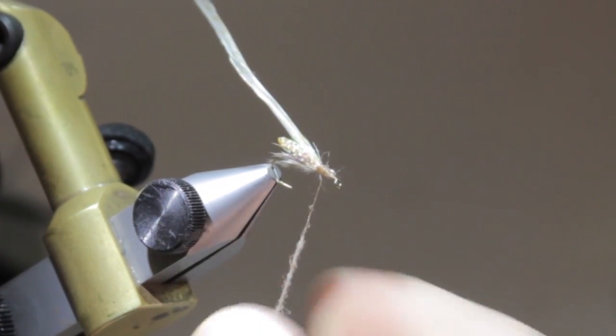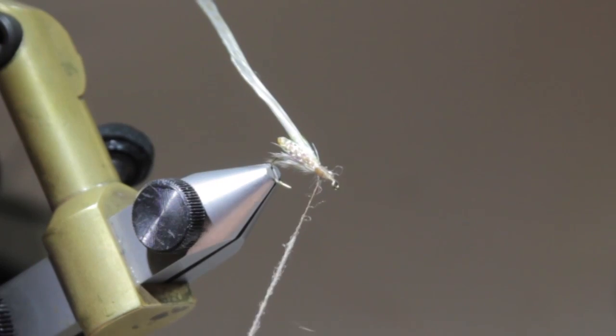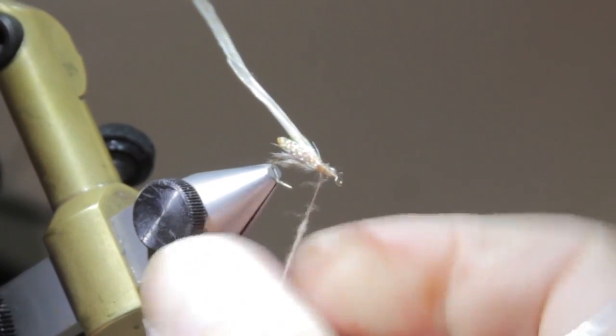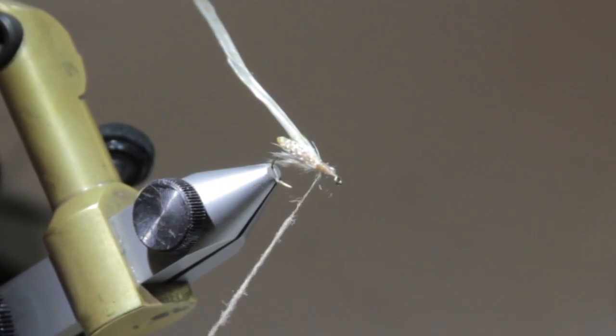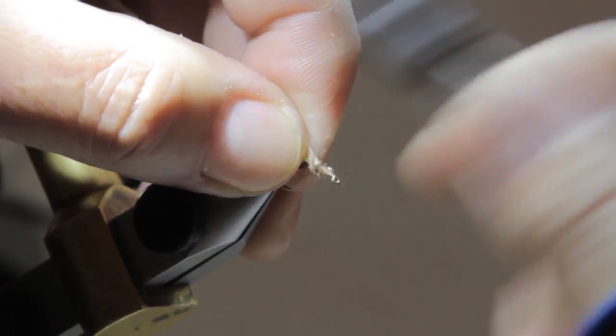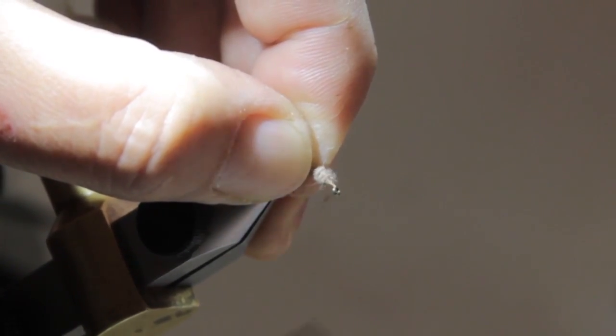This fly is a very effective pattern when you have caddis emerging and the fish are really keyed on it. You can get this fly to stick in the surface film and it's a very productive pattern.